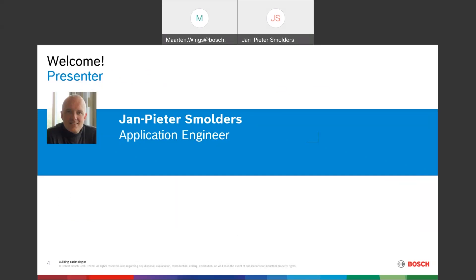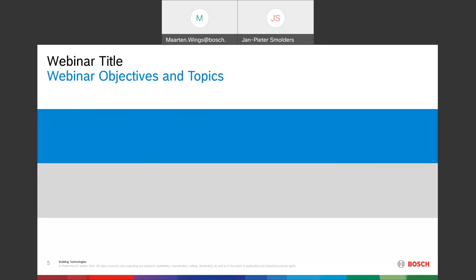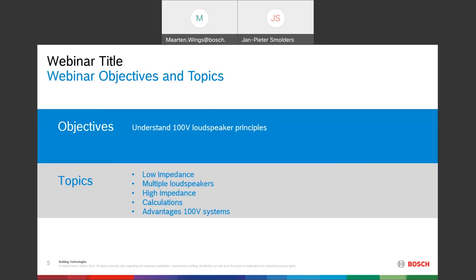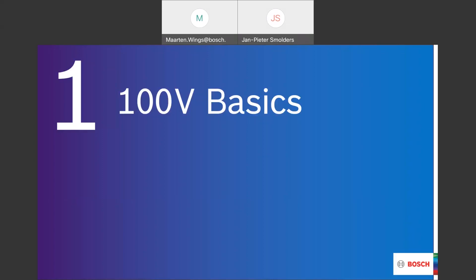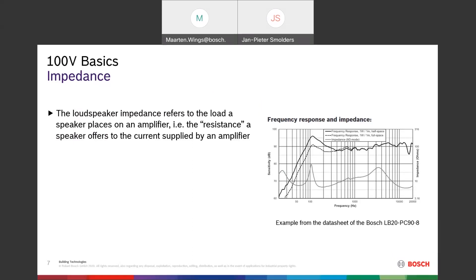Thank you very much Martin, and welcome to everybody from my side as well. This is the first webinar of a series, and the subject is 100-volt audio systems. We're going to talk about how a 100-volt loudspeaker line works — amplifiers and loudspeakers — covering low impedance, how to connect multiple loudspeakers, high impedance loudspeakers, some calculations, and the advantages of a 100-volt system.